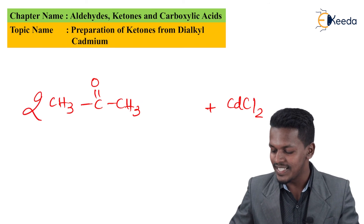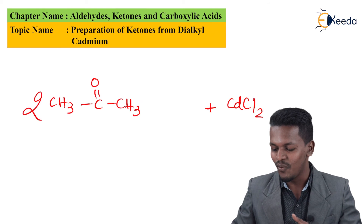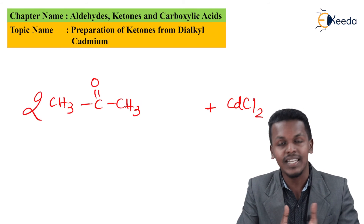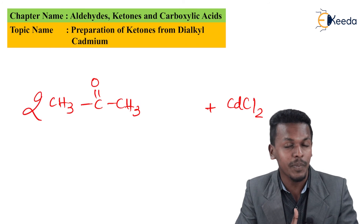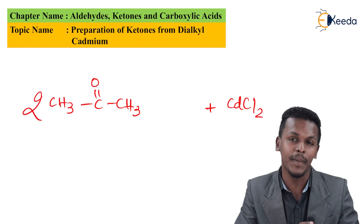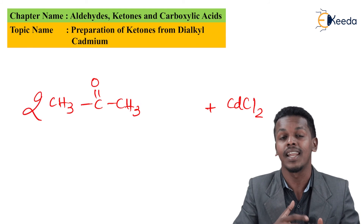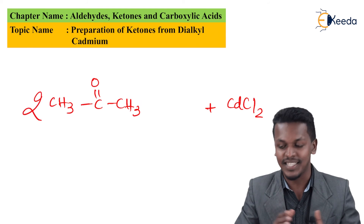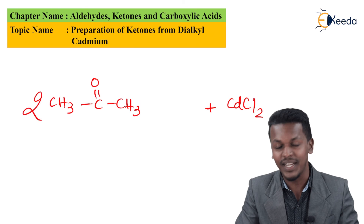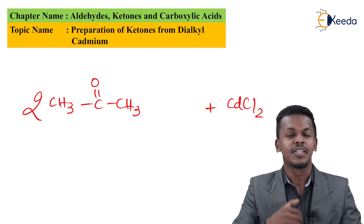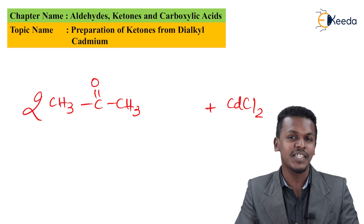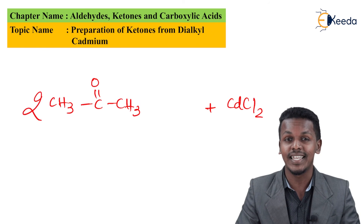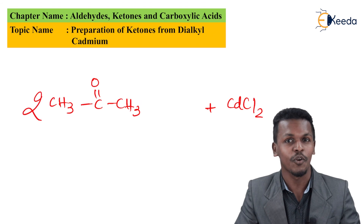So this is how we can easily prepare any kind of ketone by using dialkyl cadmium and an acyl chloride. This was the reaction and this is how we can obtain ketone. Thank you friends for watching this video — I hope you have understood this topic clearly and I'll see you next time.